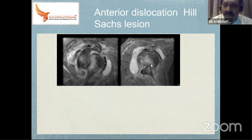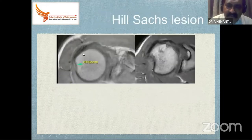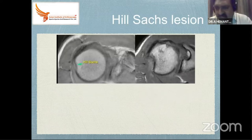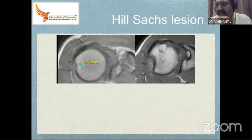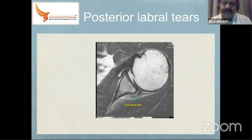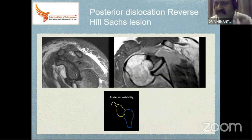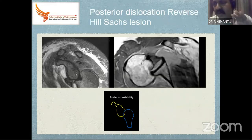Instability is a bi-directional concept: in anterior-inferior dislocation, not only the anterior-inferior structures are damaged — the posterior-superior structures are also damaged to some extent. Similarly, there is posterior labrum pathology and posterior Hill-Sachs lesions, which are commonly missed on X-ray. Epileptics and patients with electric shocks most commonly present with posterior dislocation, which we can miss — sometimes they present with locked shoulders.